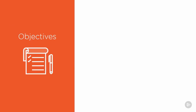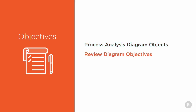In this clip, we'll review the different types of objects we'll be placing in our Process Diagram. We'll then review the different parts and processes we need to consider for the example diagram we'll be building. And then finally, we'll see how to create diagrams in the application itself.